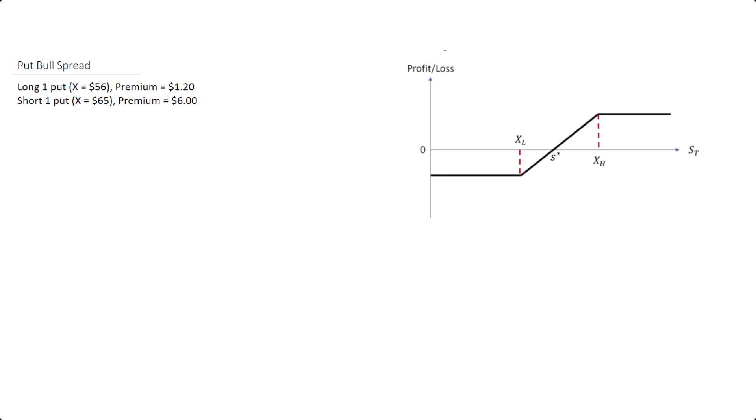In this video, I'm going to show you the calculation of the maximum gain, maximum loss, and the break-even price for the put-bull spread strategy. This strategy is suitable for investors or traders who have a slightly bullish view on the market or the underlying asset, but would like to construct it using put options. In this strategy, you will buy or long one put option at the lower exercise price, and short one put option at a higher exercise price.